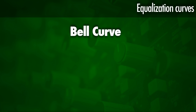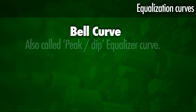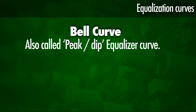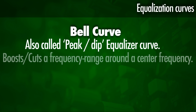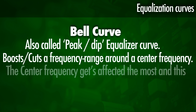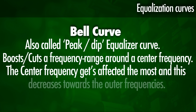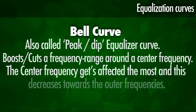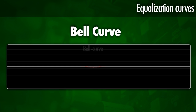Then we have a bell or peak-dip equalizer curve, which boosts or attenuates a frequency range around a center frequency. The center frequency gets affected the most, and this decreases towards the outer frequencies, making the EQ curve look like a bell.